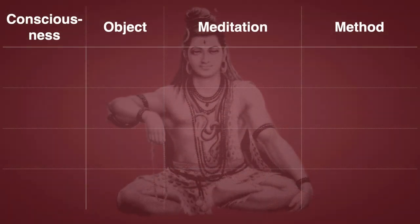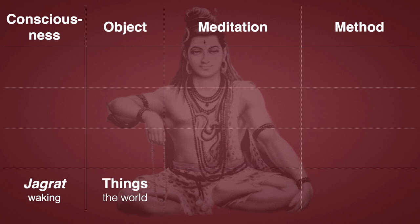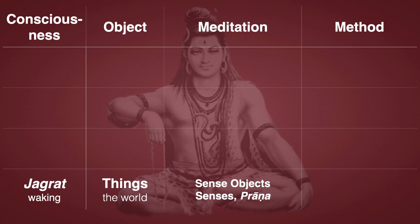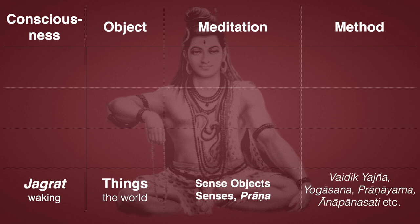The lowest state of consciousness is Jagrat — that's waking consciousness of the things in the world. The objects are the body and various physical objects. The meditation based on this is meditation on the senses, prana, vital force in the body, and sense objects. Sense objects are higher than the senses, says the Upanishad. The methods are basically karma yoga, Vedic yajna, yogasana, pranayama, anapanasati, and other similar types of meditation where the attention is brought to the various parts of the body. Buddhism is especially rich in those techniques. Qigong and similar practices are also in this category.